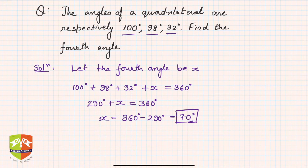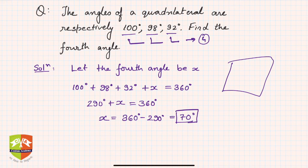What's the learning in this kind of question? It's a very simple question, straightforward. Three angles are given - 1, 2, and 3 - and you have to find the fourth one. I can find the fourth one because I know the sum of the four angles of any quadrilateral is always 360 degrees.